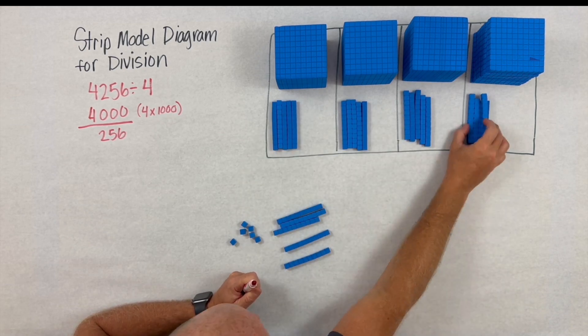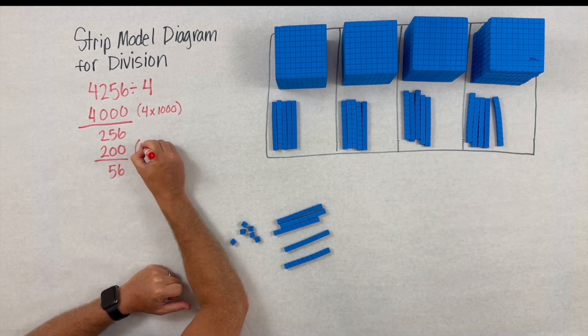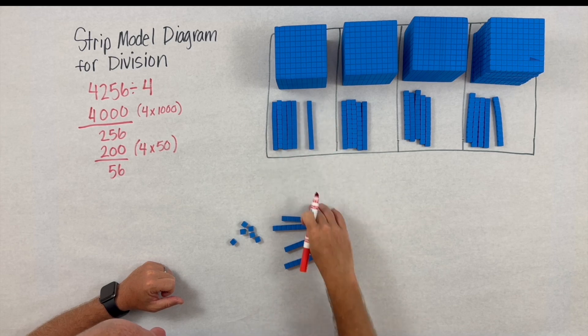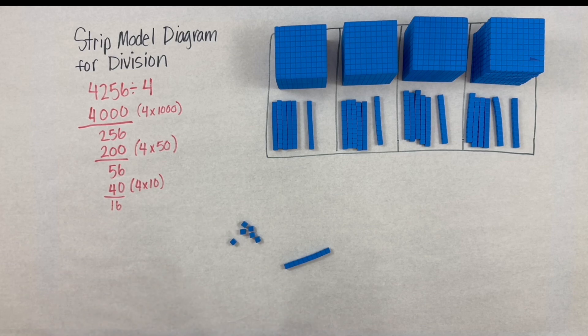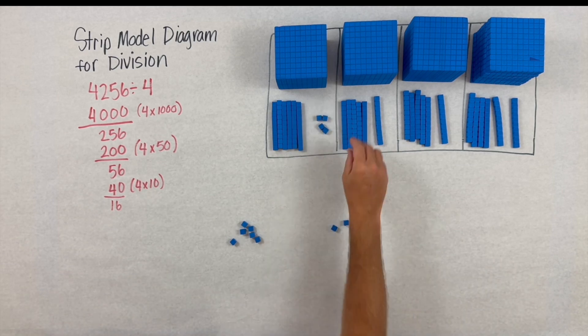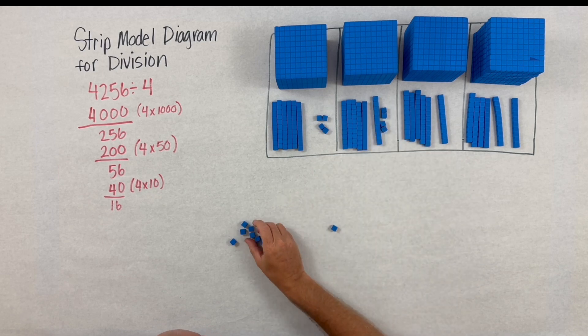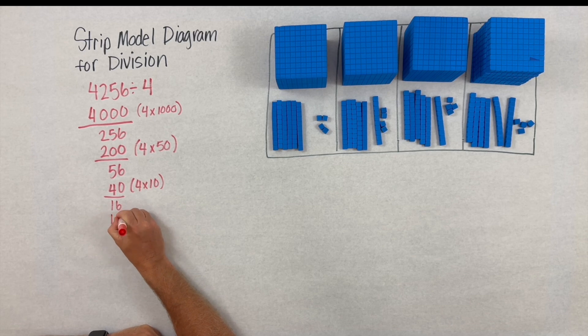Then we'll go ahead and share one extra stick of 10 inside each section, and we'll need to decompose that last 10 into 10 ones. When we do that, we're now able to see that if we have 16 ones and we divide that into four groups, we'll get four in each group.